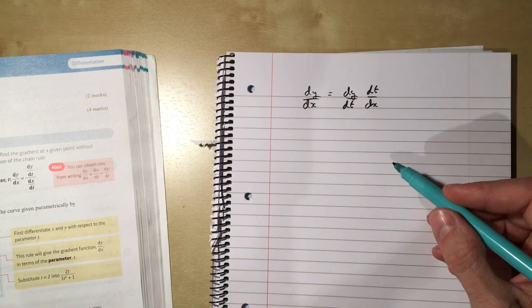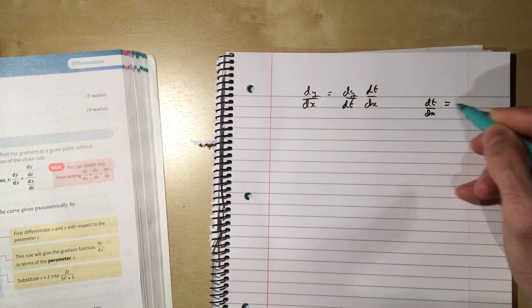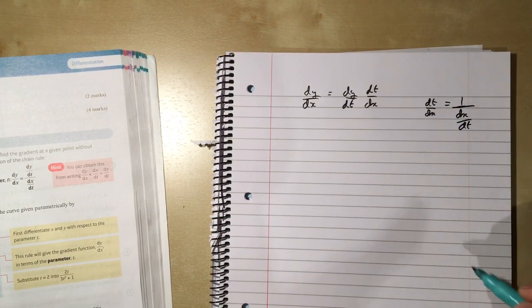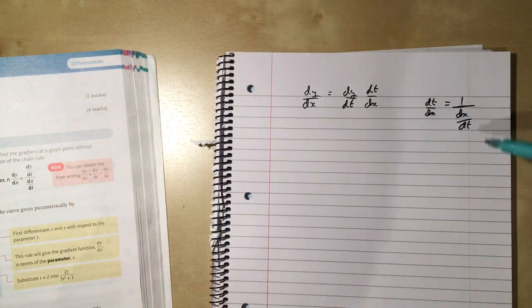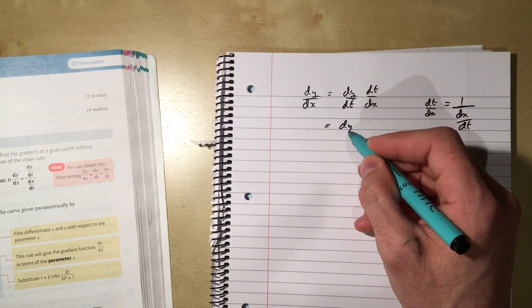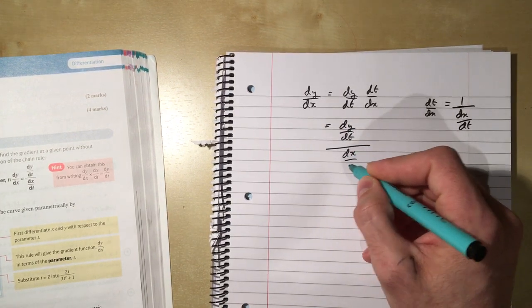Now I can also use the fact that I know that dt/dx is 1 over dx/dt, don't I? That's just the rule: dy/dx is 1 over dx/dy. So I can rewrite this as dy/dt divided by dx/dt.